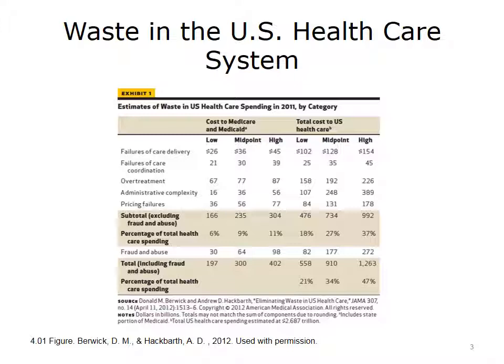The behavioral category might include things like obesity, smoking, non-adherence to prescriptions, and alcohol abuse. These are areas that are more under consumer control and would be spread among the two categories of waste on this slide: failures of care delivery and failures of care coordination. The clinical category would be spread among failures of care delivery, failures of care coordination, and over-treatment.